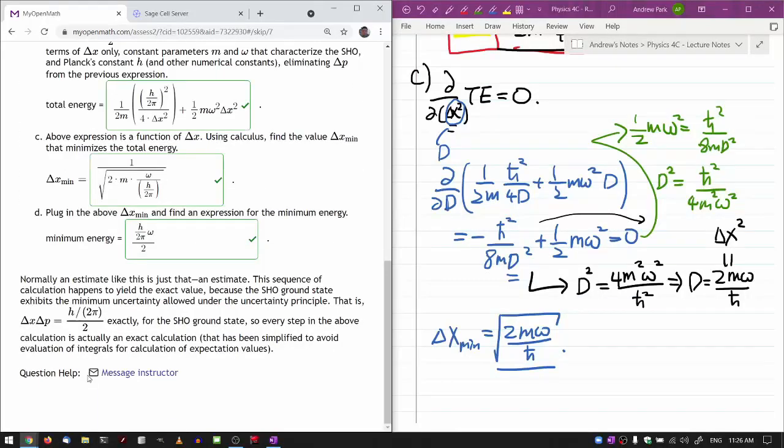And the note at the end is normally an estimate like this is just that, an estimate. There's a great deal of connection between estimate of this kind and what we call dimensional analysis that you will see me do later in the class. And anyways, so this kind of estimate usually gives an answer that's within an order of magnitude. Here, because of the property of the simple harmonic oscillator ground state, it ends up being the exact answer.